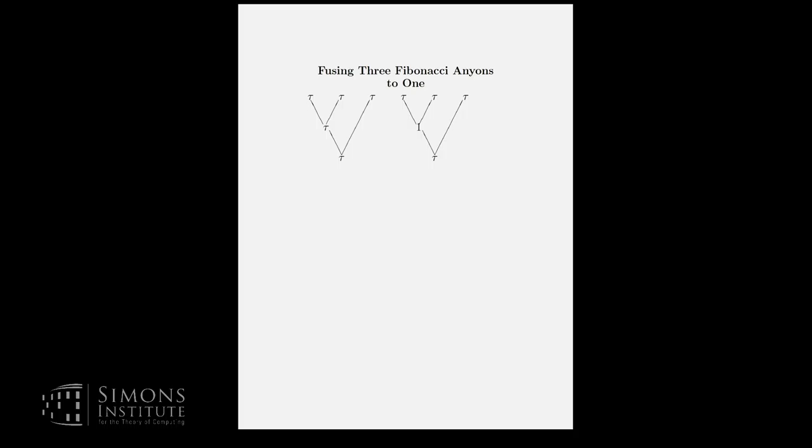There's a third process, which is not shown here because it doesn't fit the title. Three Fibonacci anyons can fuse to vacuum by first fusing to one anyon here, and then that one and this one can fuse to vacuum. So there are actually three options. By the way, one option for fusing to vacuum, two options for fusing to a single anyon, three all together. This is the beginning of the Fibonacci sequence. Fibonacci's name is justified here.